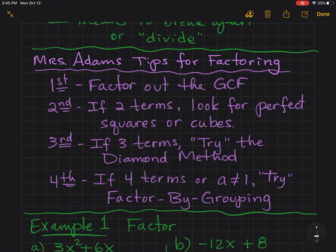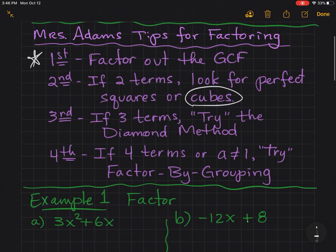Here are a few tips for factoring. First, and most importantly, factor out the GCF. Second, if there are two terms, look for perfect squares or cubes. We're actually going to go over cubes on another day.